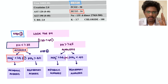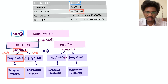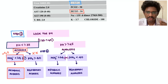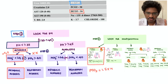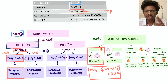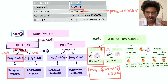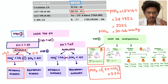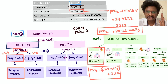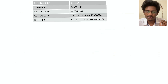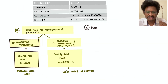Next step: metabolic or respiratory — check the bicarb. Is it less than 24? Yes, so it is metabolic acidosis. Step three: compensation. For metabolic acidosis, expected PCO2 = 1.5 × bicarb + 8 ± 2. With bicarb of 16: 1.5 × 16 + 8 ± 2 = 30 to 34. The given PCO2 is 30 — within the range. Step four: it is completely compensated, so this is a simple ABG disorder, not a mixed disturbance.